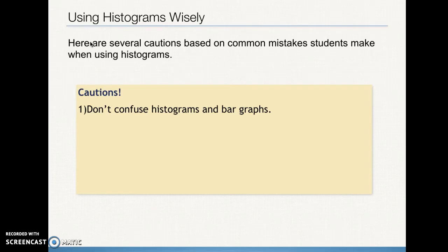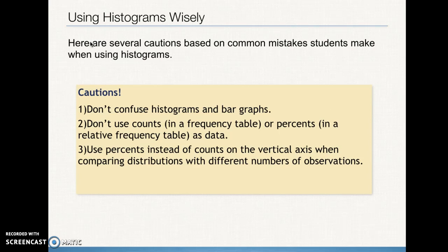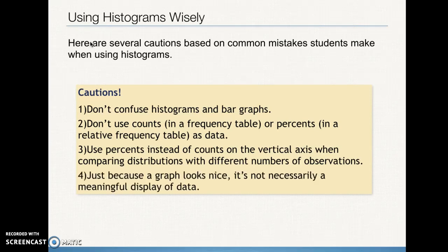When using histograms, histograms are for the numerical or quantitative data. Bar graphs are for categorical data. They have different features. They both have bars, yes, but bar graphs, it's different categories on the axis, and for histograms, it's numerical values on the axis. We're not going to use the counts in a frequency table or percents in a relative frequency table as data. We're going to use percents instead of counts on the vertical axis when we're comparing distributions with different numbers of observations so that we can compare apples and apples. Instead of having counts, maybe we took data for 30 female students and 50 male students. In order to make sure that we can compare apples and apples, we can't compare counts, so we would have to calculate percentages for both and compare the percentages. And just because a graph looks nice, remember, it's not necessarily a meaningful display of data. We want it to be meaningful, and we want it to not be misleading. Those are two things we need to be careful with.